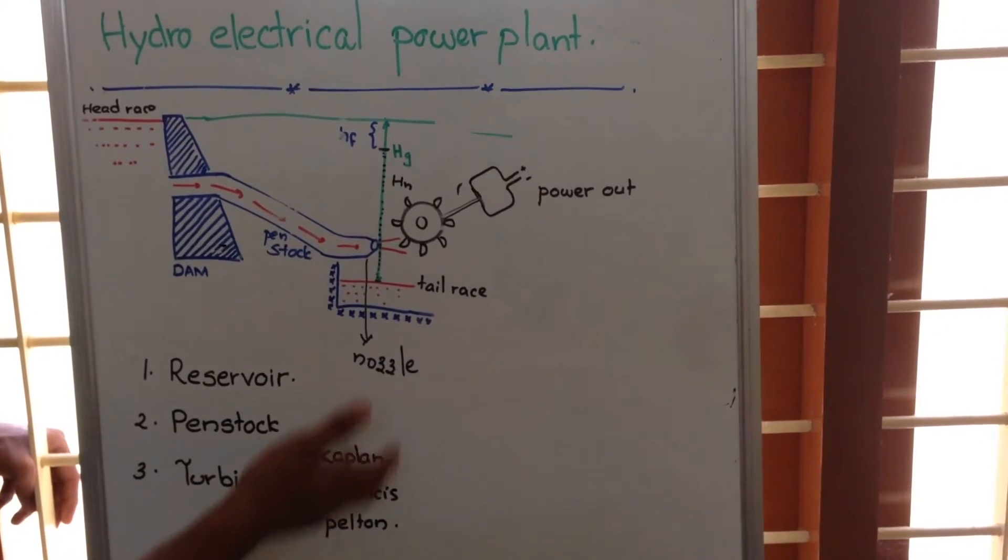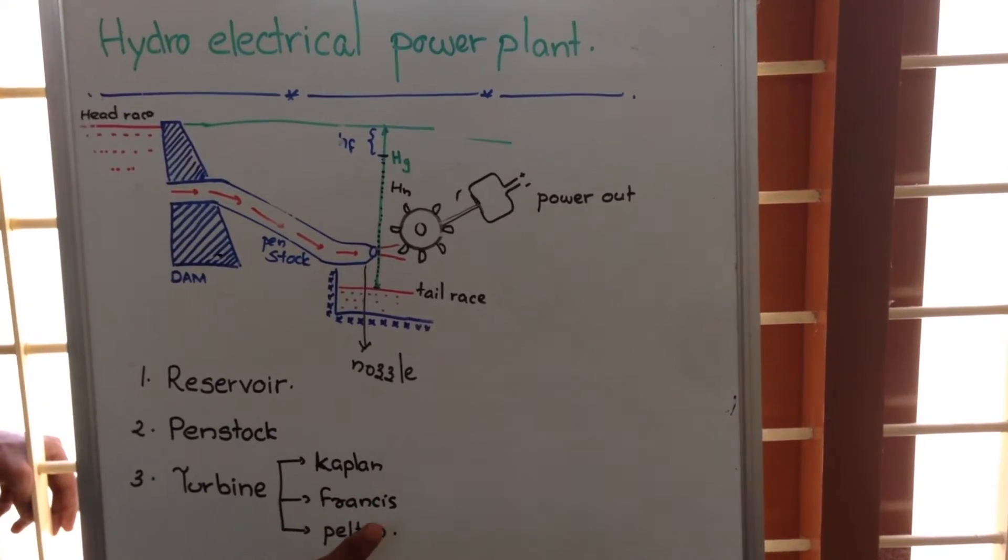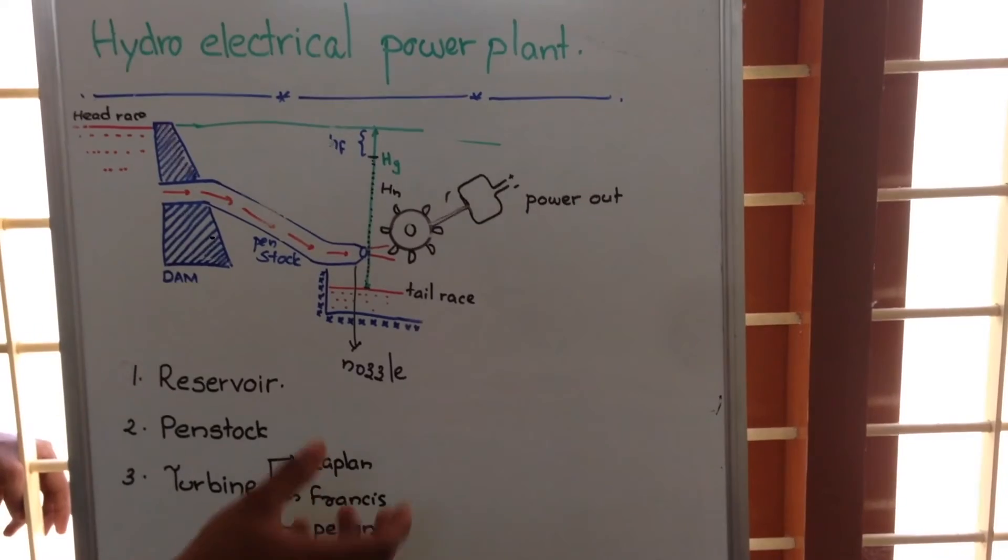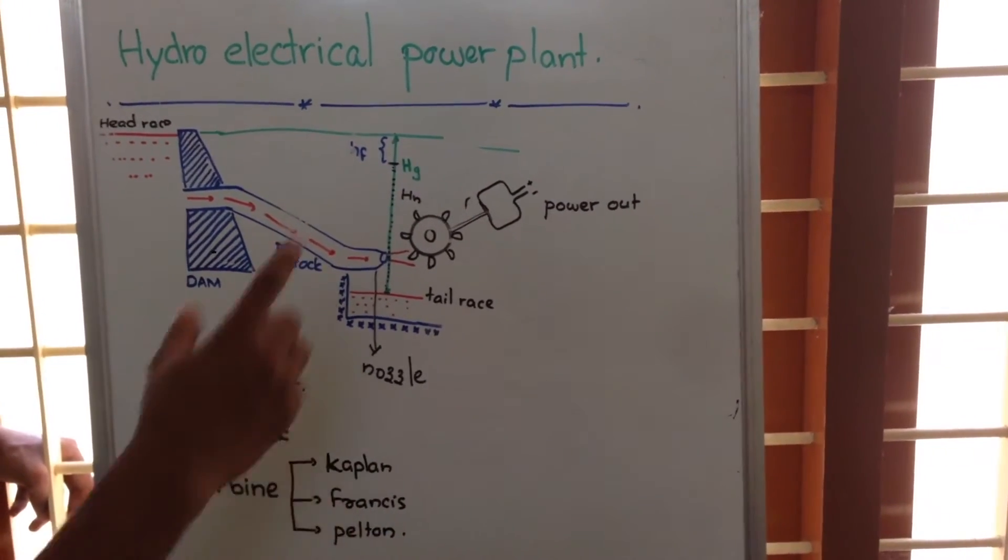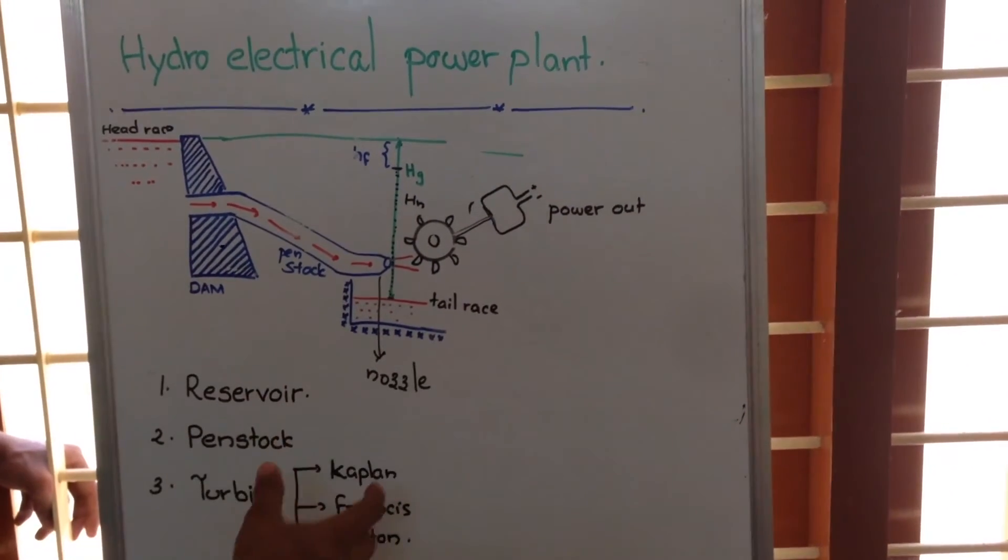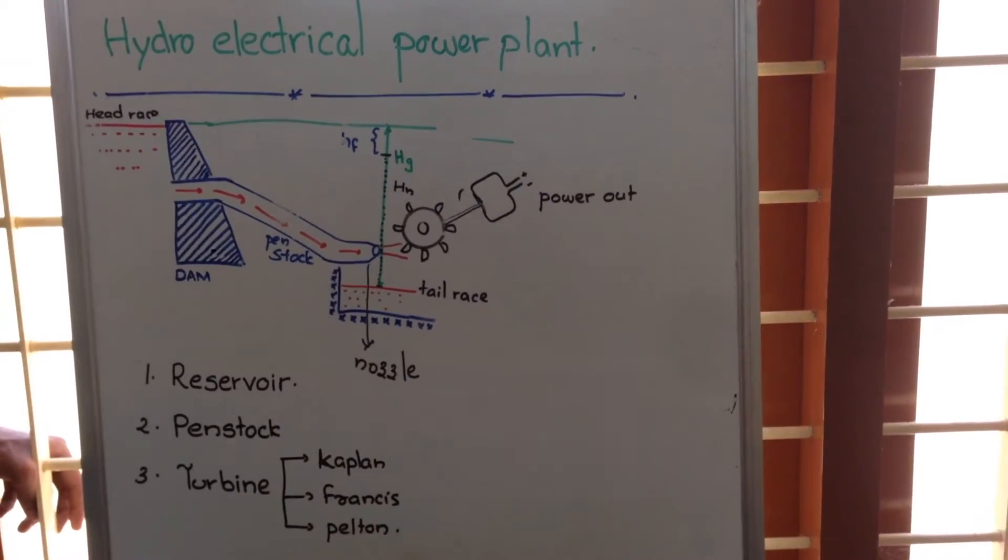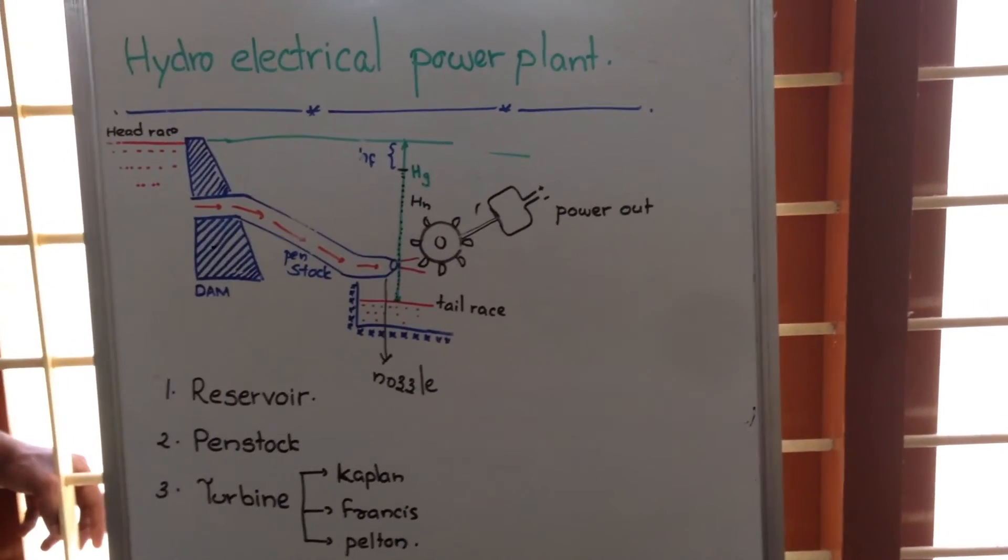This portion is called a nozzle. In Kaplan and Francis turbines, along with kinetic energy, we are also using pressure energy to run the turbine. This mechanical energy is then converted to electrical energy by the electric generator.